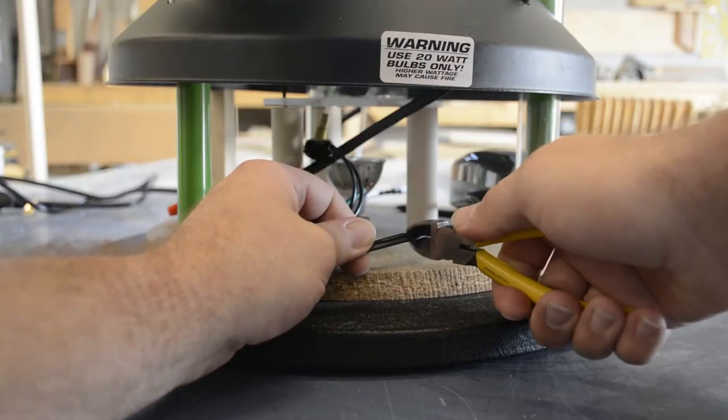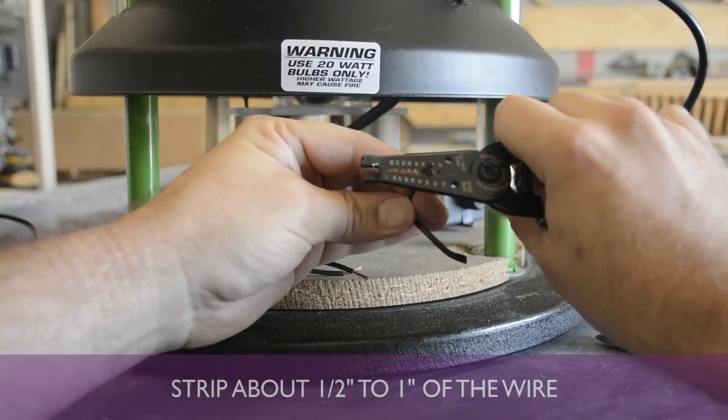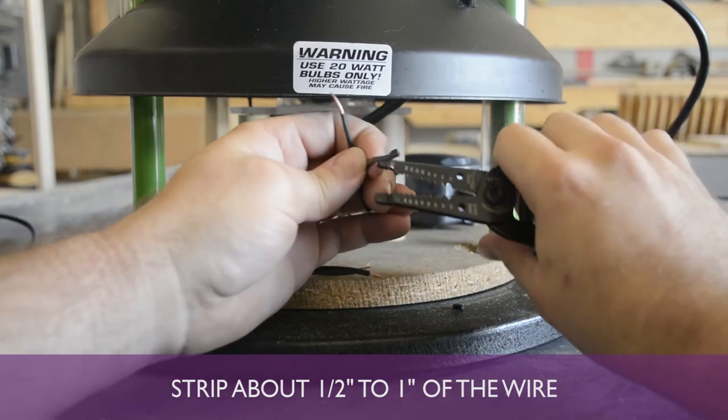Cut the cord of the new air pump so that it goes about an inch further than the bar connector. Using the wire strippers, strip the cord of the new pump and the old cord to expose the wires.